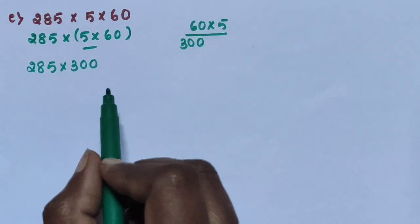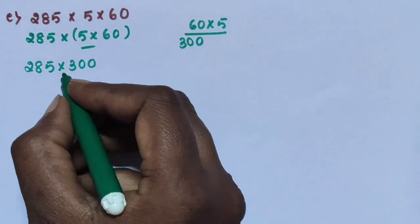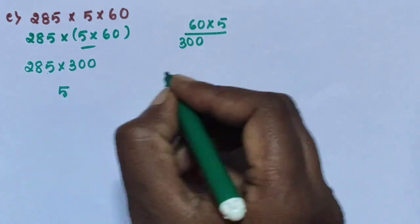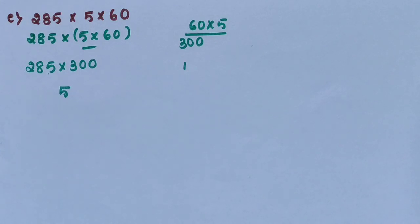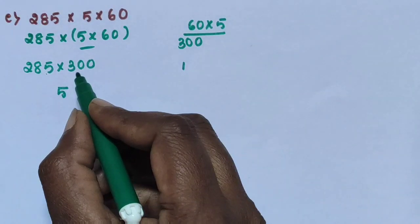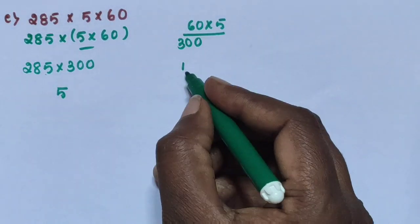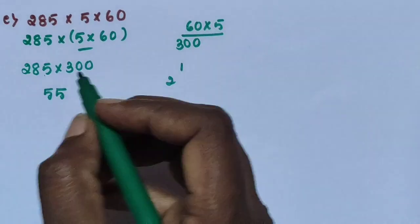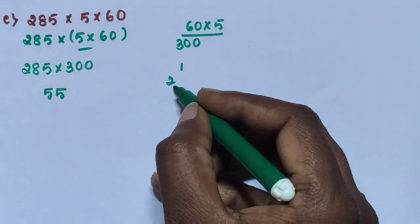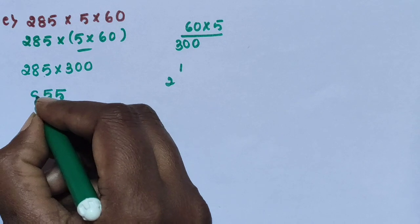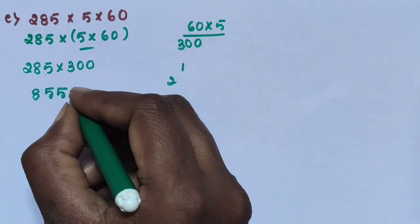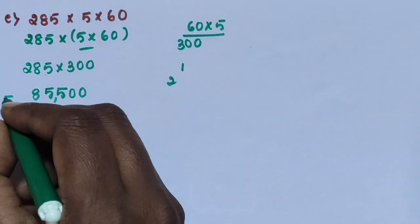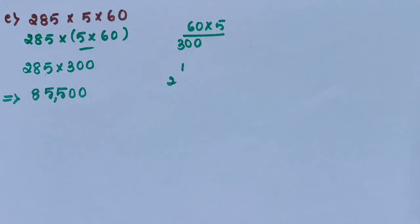Next, multiply 285 into 300. 3 fives are 15, write 5, carry 1. 3 eights are 24 plus 1 is 25, write 5, carry 2. 3 twos are 6, 6 plus 2 is 8. Result is 855, and with place values the answer is 85,500.